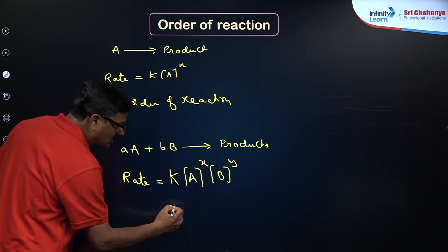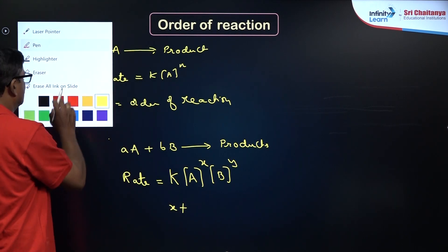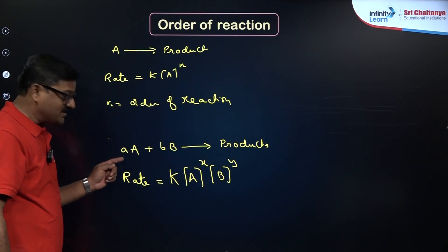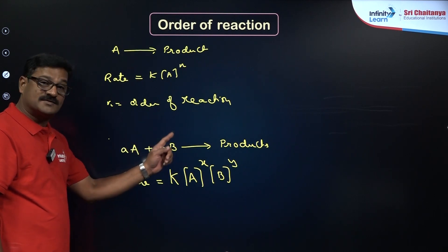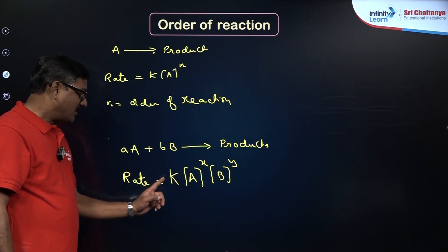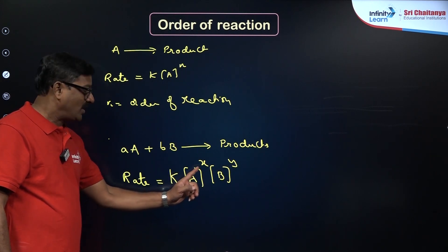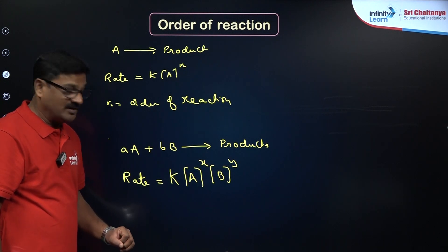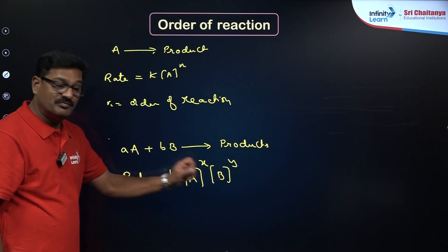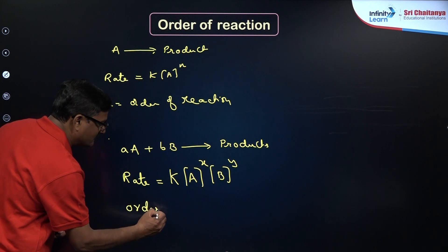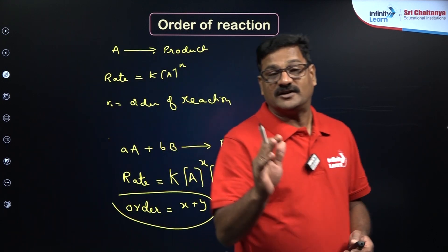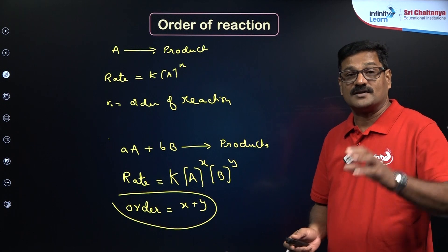The overall order of the reaction is x + y. Experimentally, the rate law is determined as rate = k[A]^x [B]^y. x and y are the orders with respect to A and B respectively, so the overall order of the reaction is x + y. It is a purely experimentally determined value.